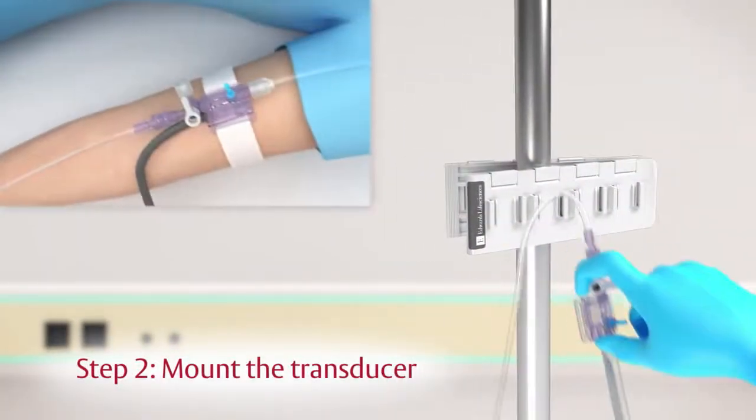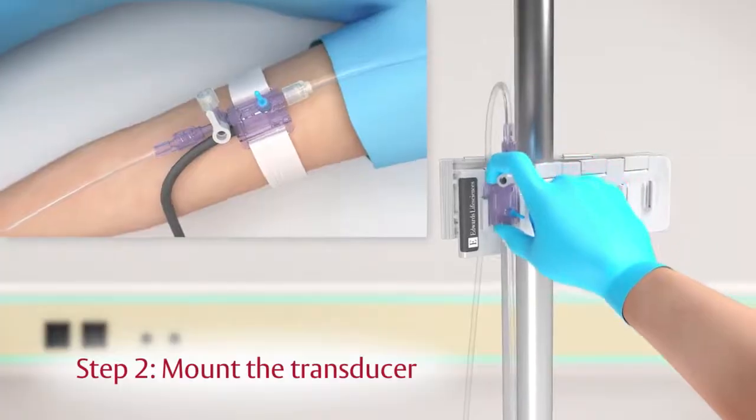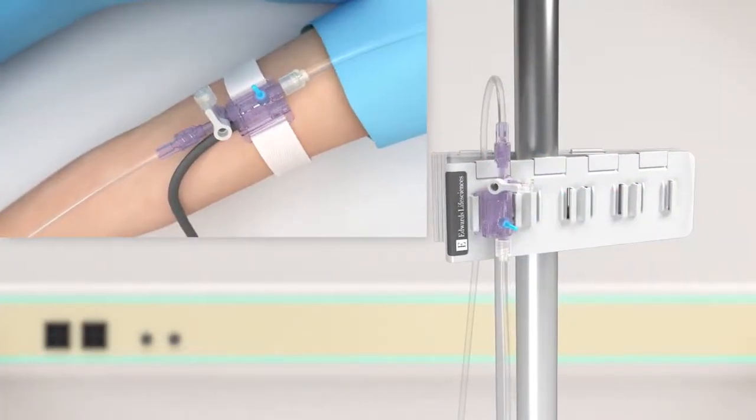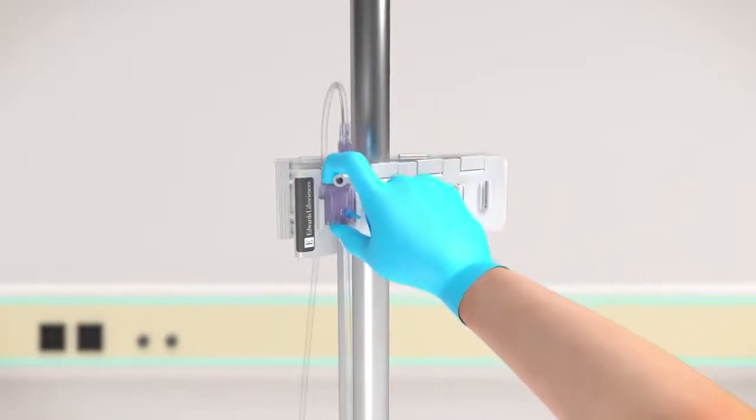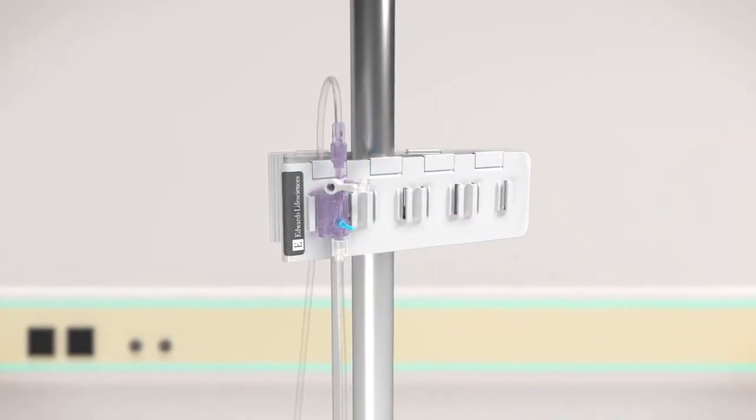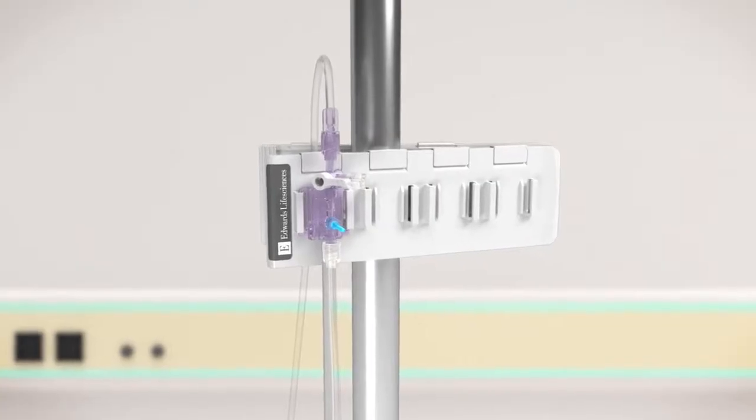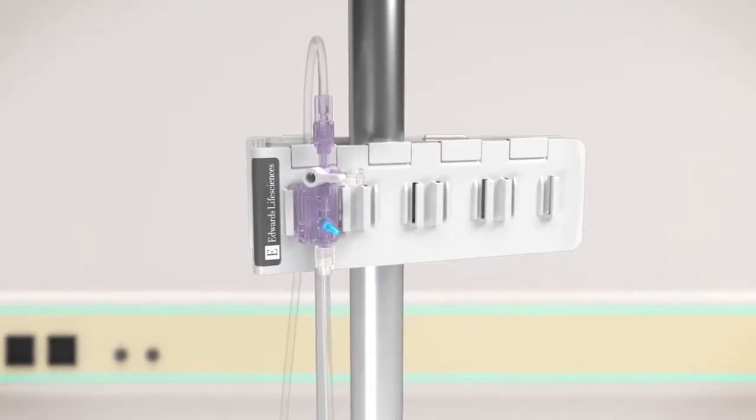Step 2: TruWave transducers can be mounted on either an IV pole or on the patient's arm. The setup procedure is the same. This video demonstrates the pole mounted method. Insert the TruWave transducer into a mounting backplate that is secured on an IV pole.